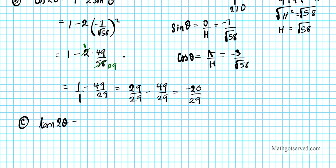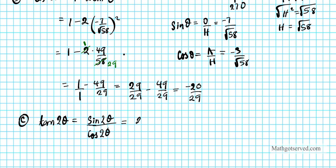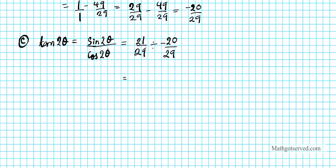For tan 2θ, I'll use sine 2θ divided by cosine 2θ. Sine 2θ is 21 over 29, divided by cosine 2θ which is negative 20 over 29. Using keep-change-flip: 21 over 29 times negative 29 over 20. The 29s divide out to 1, giving a final answer of negative 21 over 20 for tan 2θ.